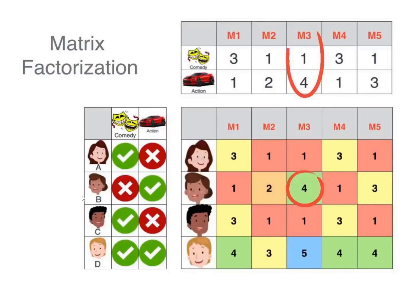For example, user B doesn't prefer comedy but prefers action. For movie three, it has 1% comedy weight and 4 for action. If we multiply these as a dot product we get 4, and that's how the rating matrix is generated from these two factors.